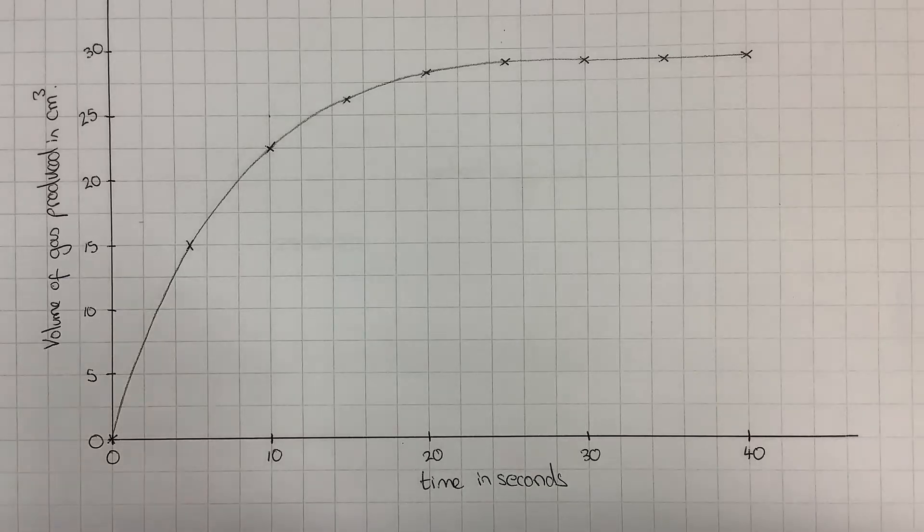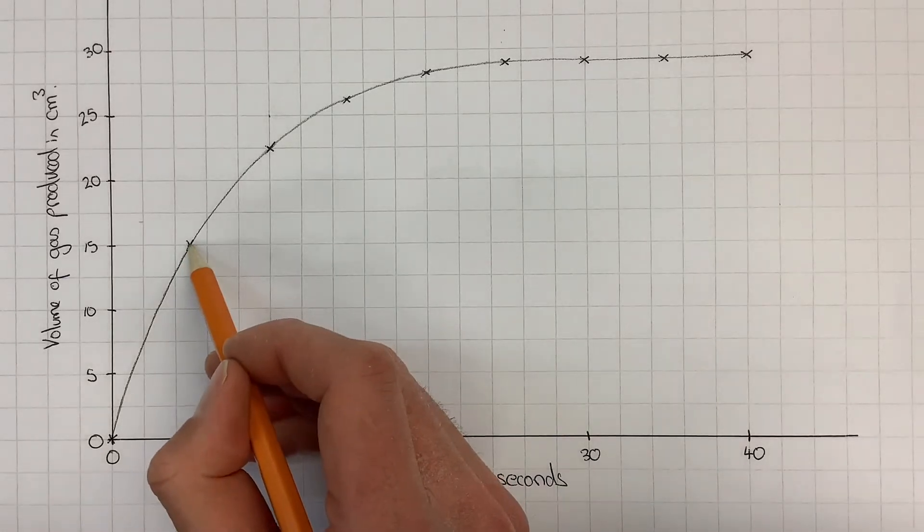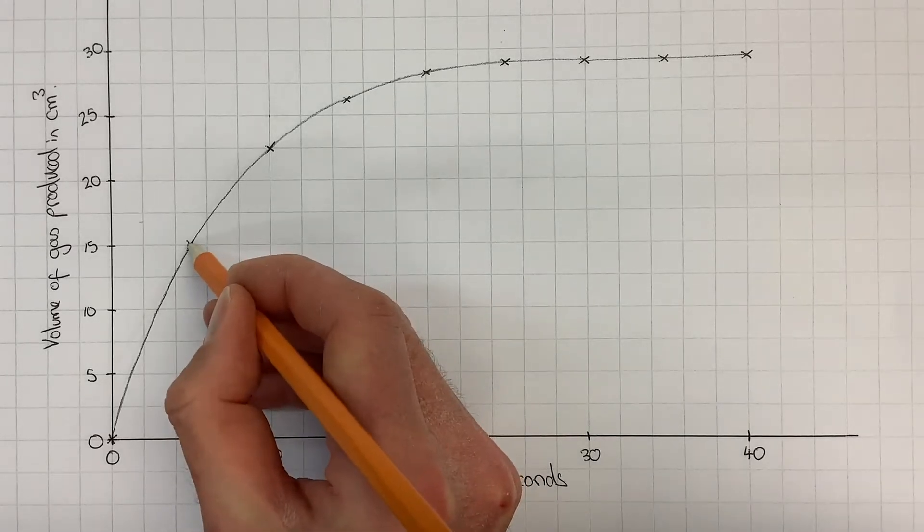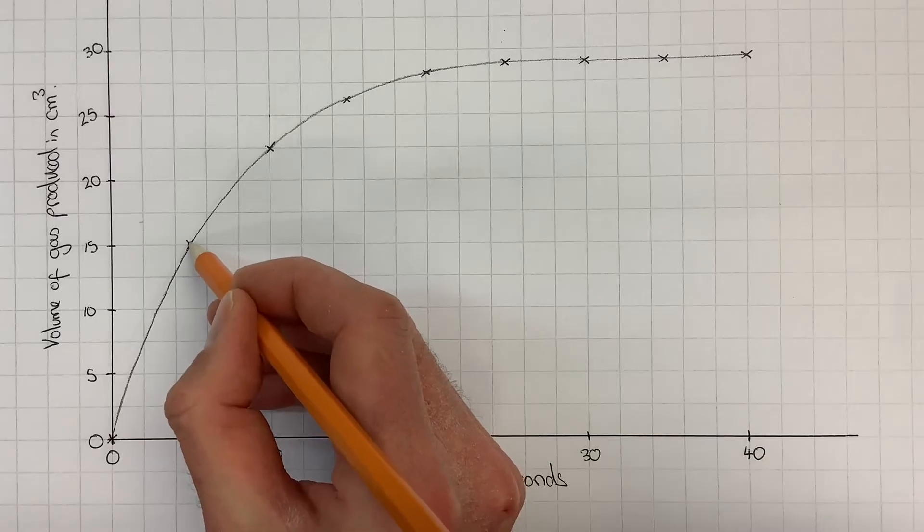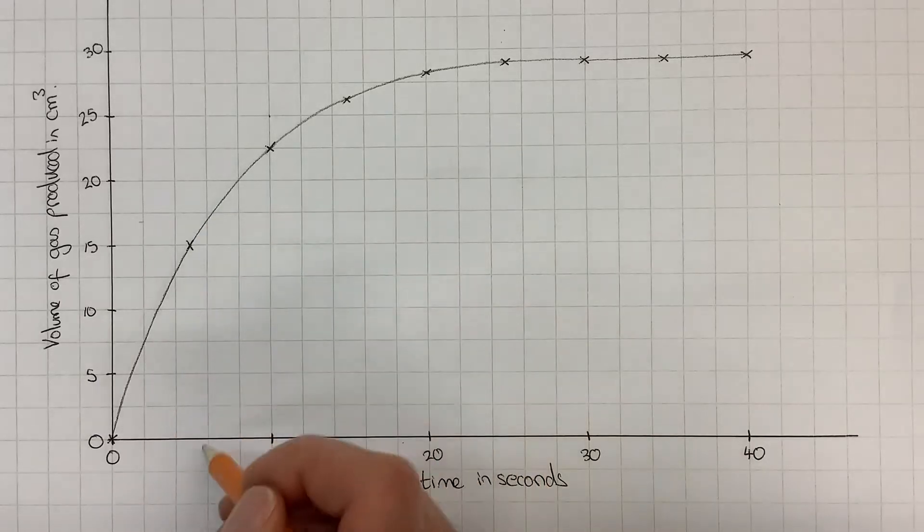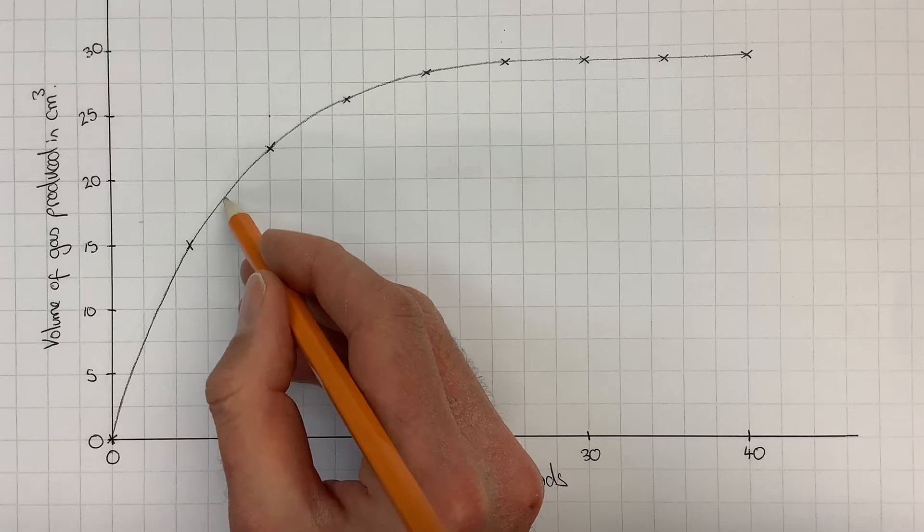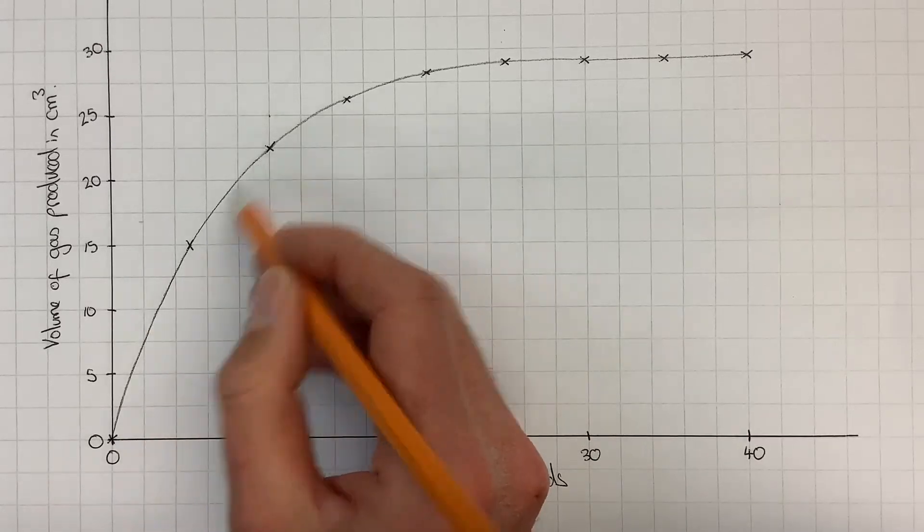If we wanted to find the rate of reaction at a time of five seconds, then we'd need to estimate what the gradient of the graph is at this point of five seconds. We don't have to choose a point where there's already a point on the graph. We could do it for any point that we like on the line.